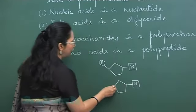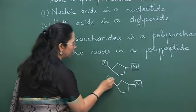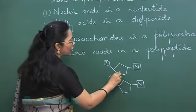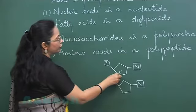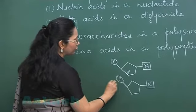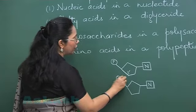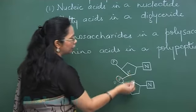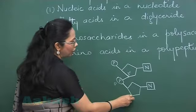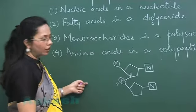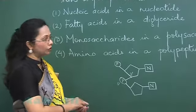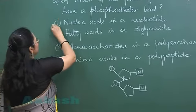The 3-prime position of one sugar and the 5-prime position of the next form a bond linking the two nucleotides together. That is how nucleotides are attached one after the other, forming a chain through this phosphodiester bond. So our answer is option 1.